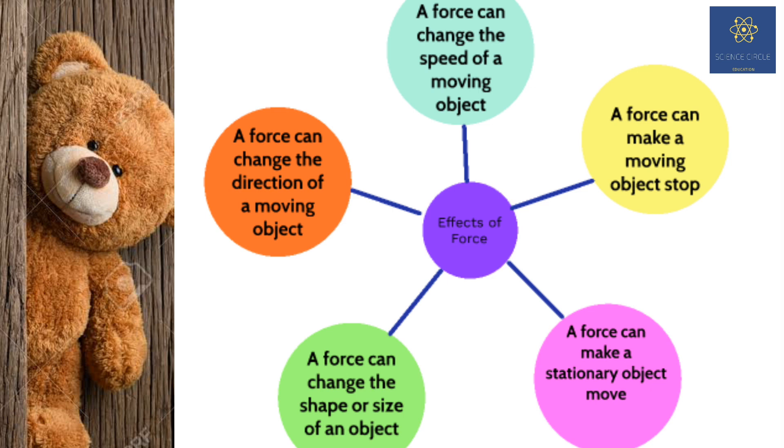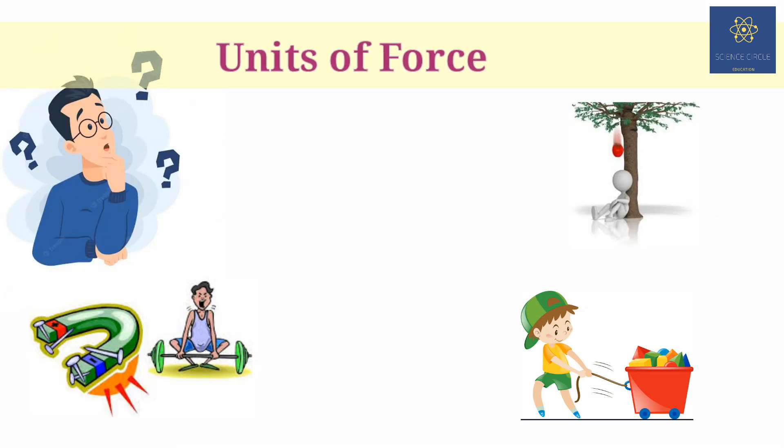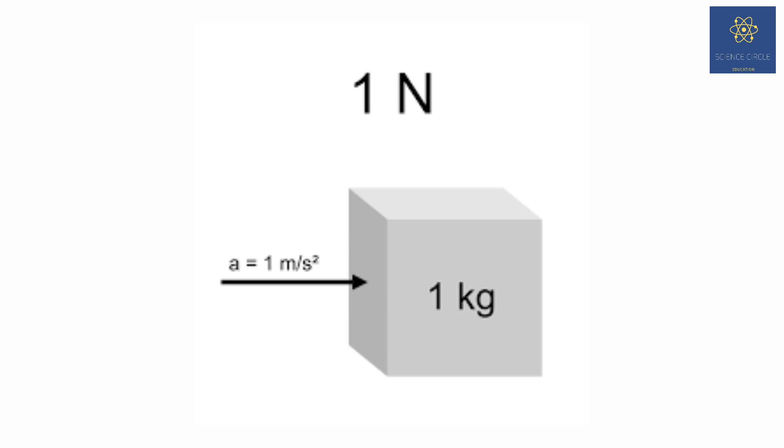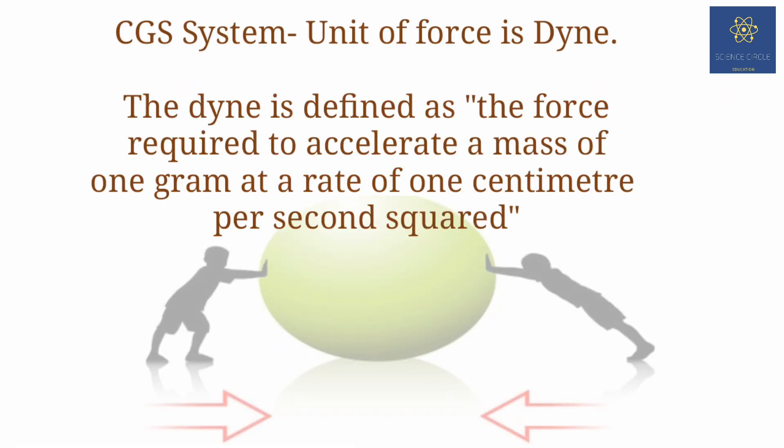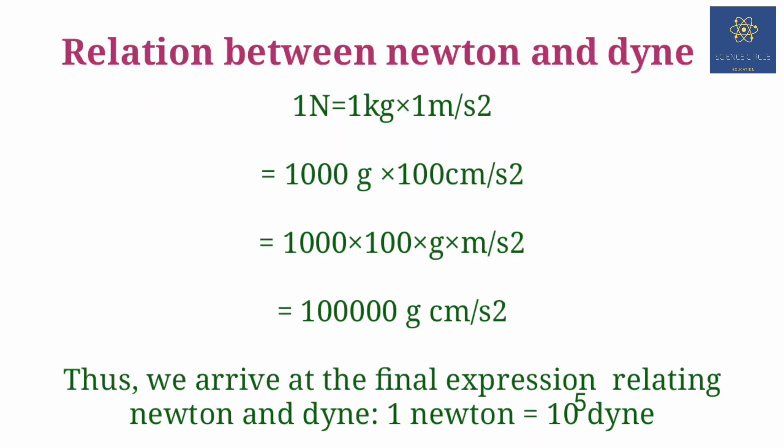These were the effects of force. Now we will be discussing the units of force. The SI unit of force is newton. A newton is a force which can make an object of one kilogram mass to move at a speed of one meter per second. It can also be represented in CGS system as dyne. The force necessary to cause an acceleration of 1 centimeter per second in an object of mass of 1 gram. There is also a relation: 1 newton is equal to 10 to the power 5 dyne.